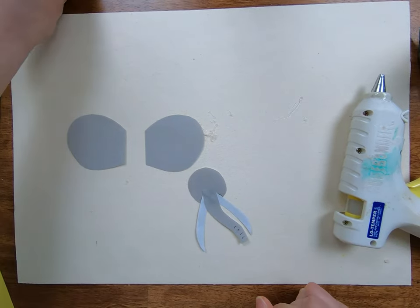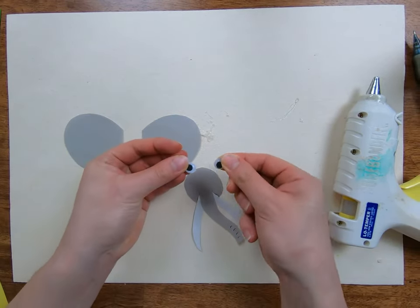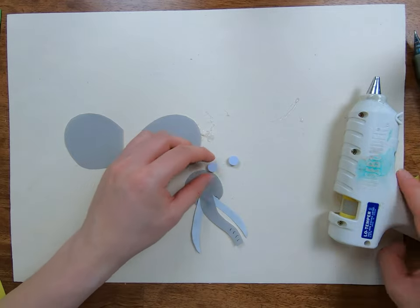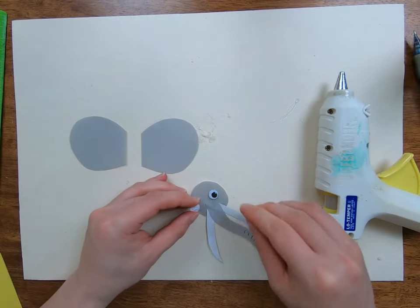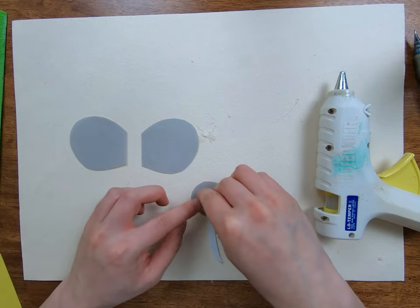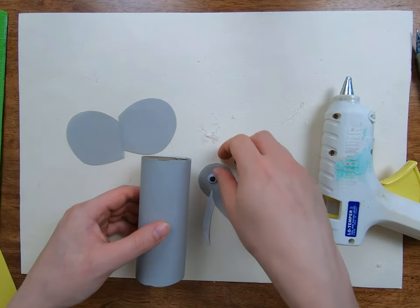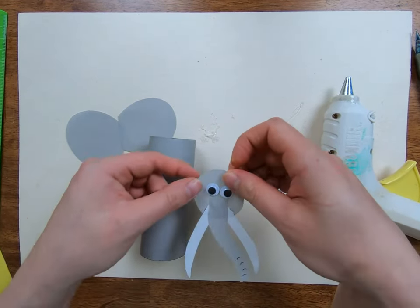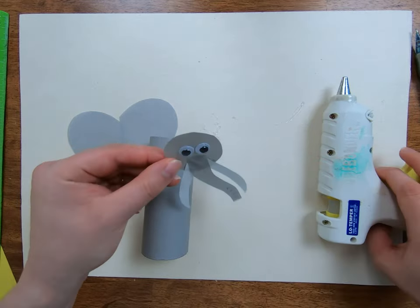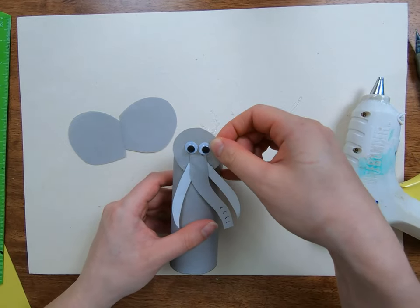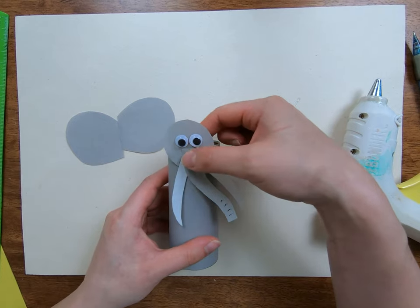Very good. Now our elephant needs some eyeballs, so let's take two more googly eyes for that. Time to attach it onto our paper roll. Let's put a little blob of glue on the back of the face. And now press your face on at the top of the roll where you want it to go.